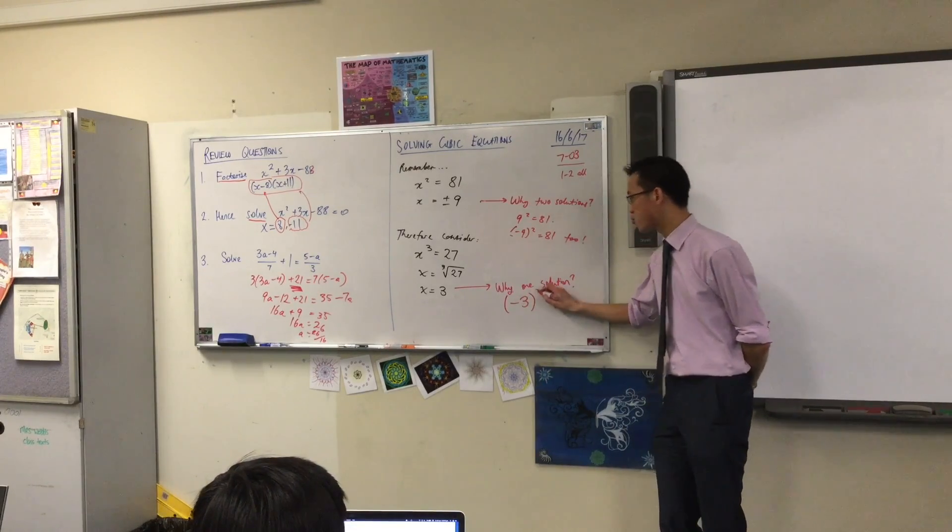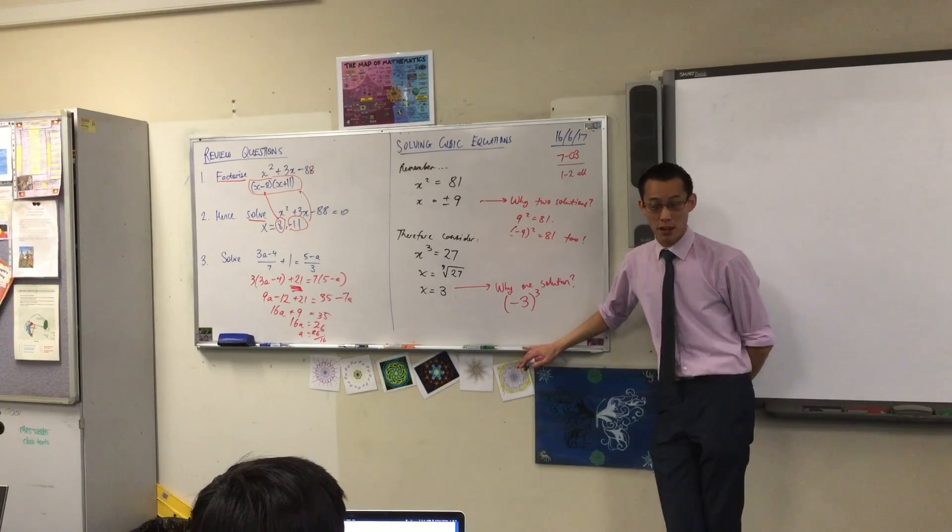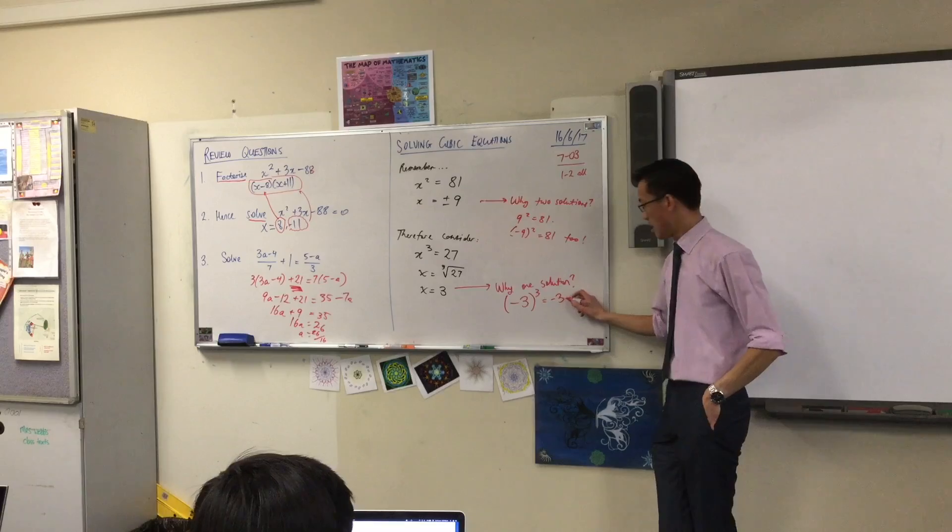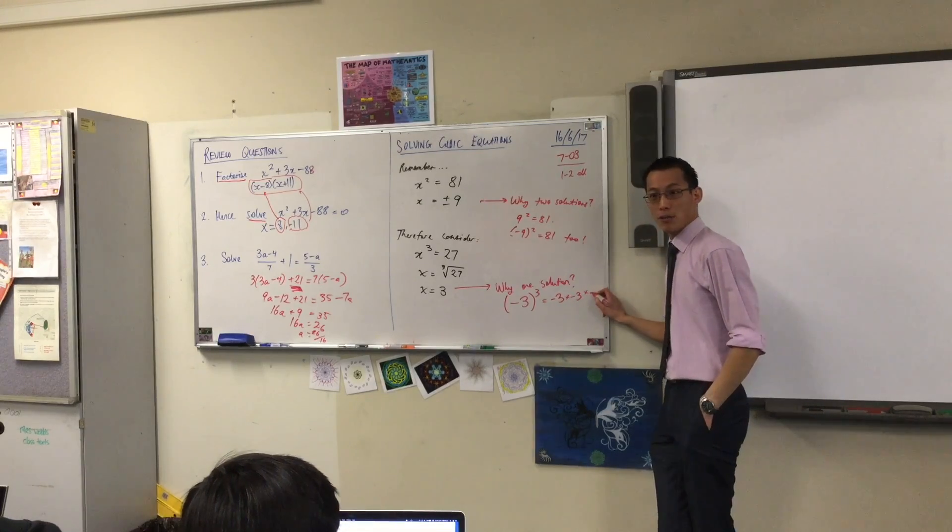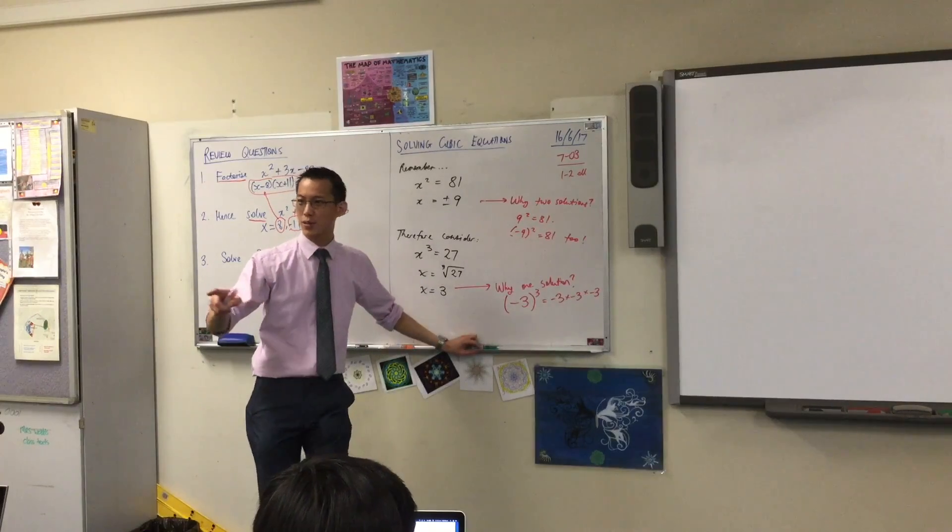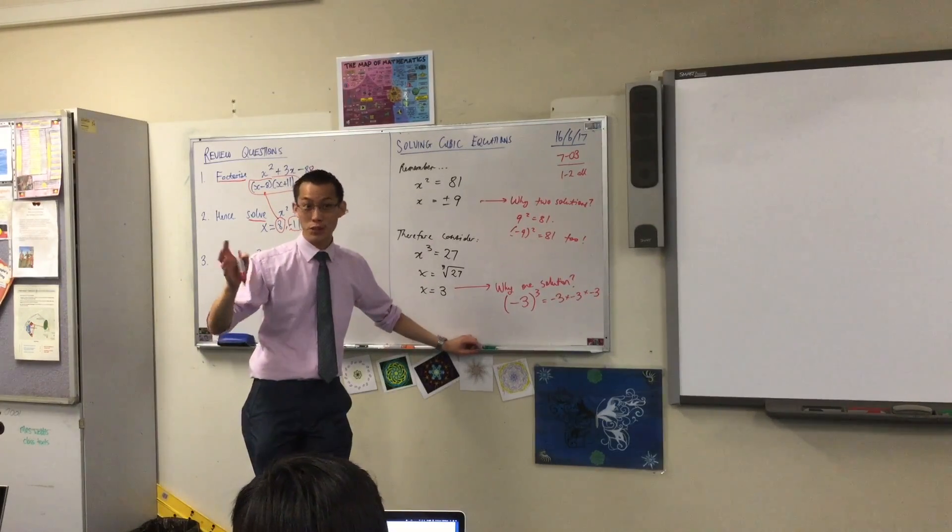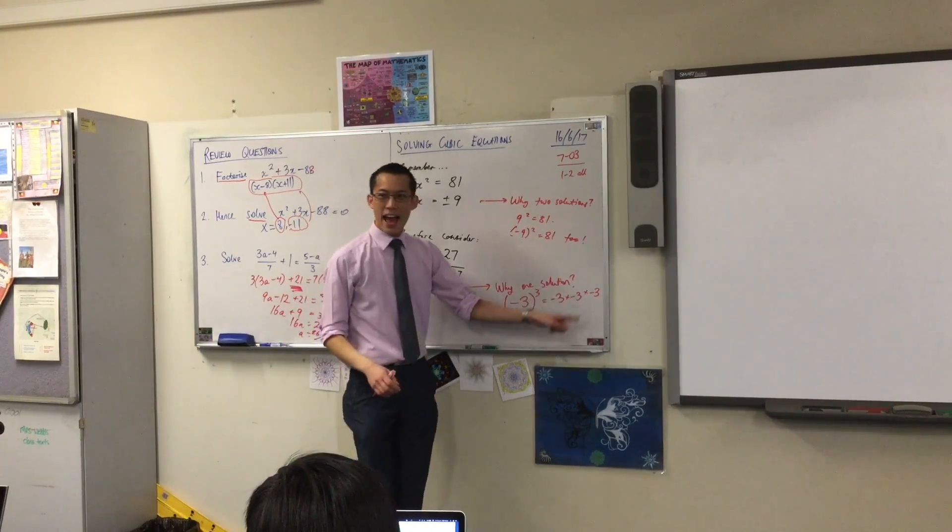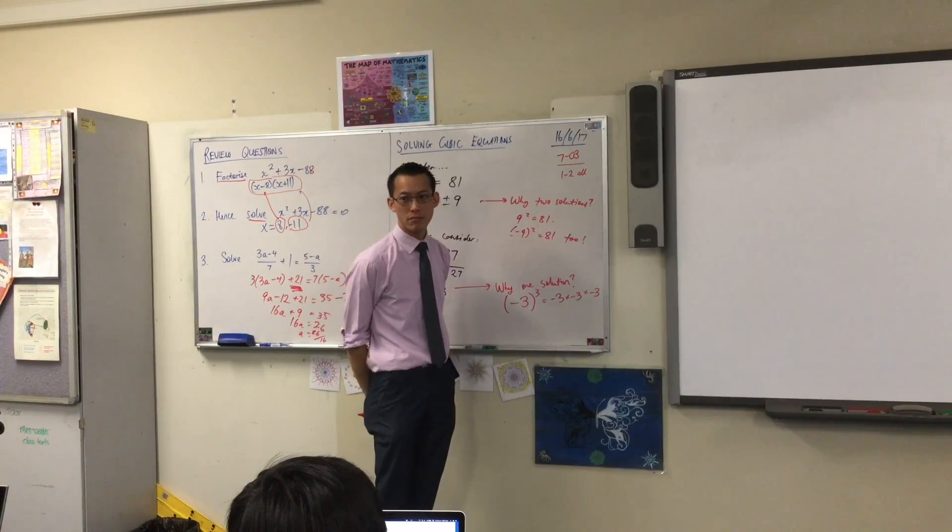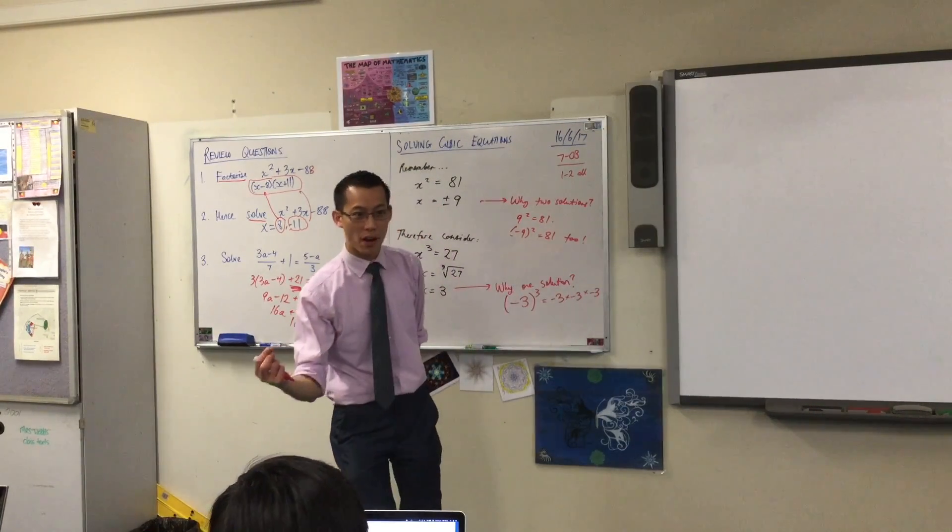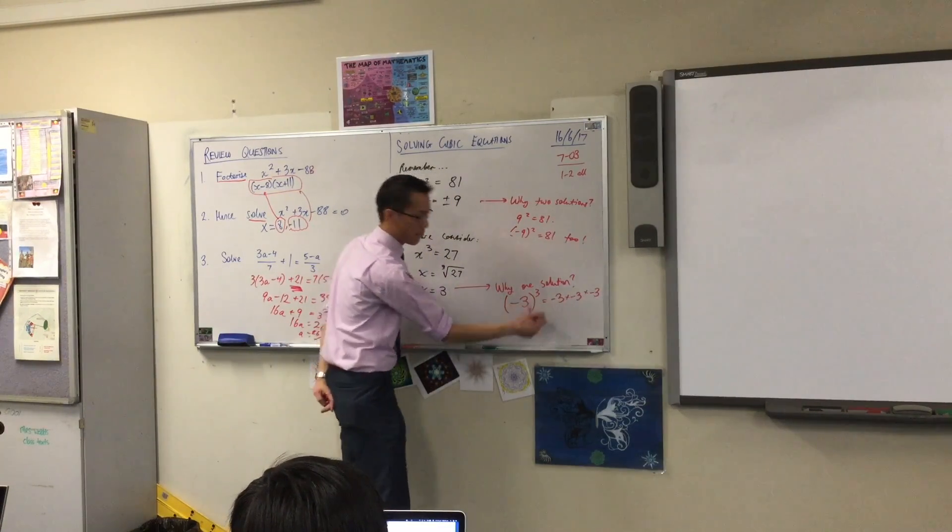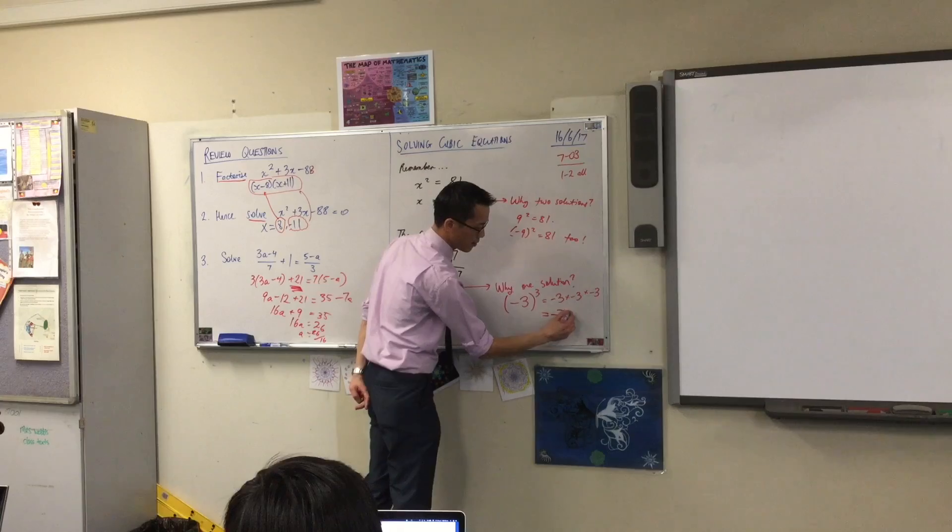So if we try negative three and we cube it, what cubing means, as Ryan suggested, is you take that number and then you multiply it by itself that many times. But you can see, and this actually is very similar to the lock-up problem, the riddle, do you remember? How many negative signs are there? Three. There's an odd number. So these two will pair up, but this one will not pair up. So that's why you get that.